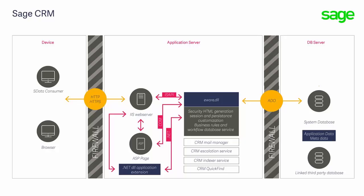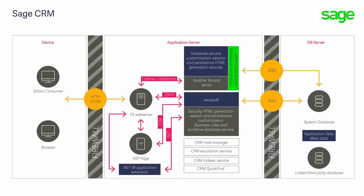Sage CRM 7 saw the start of an evolution to a new product architecture and a move away from reliance on the eWare DLL written in Delphi. The diagram above shows how Sage CRM has moved to a hybrid architecture that mixes Java technology with the existing eWare DLL design.